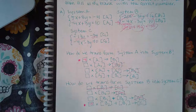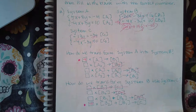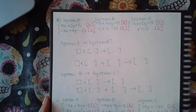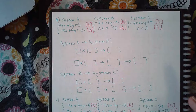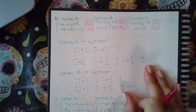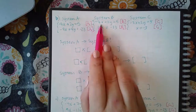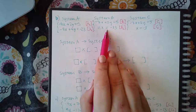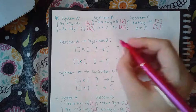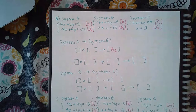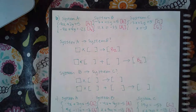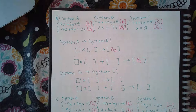Here's another example with system A, system B, and system C. Going from system A to system B: notice that line one is not changing — it's line two that changed. So I know I'm going to end up selecting the option that ends with B2, not B1. Any answer choices with B1 can be crossed out.